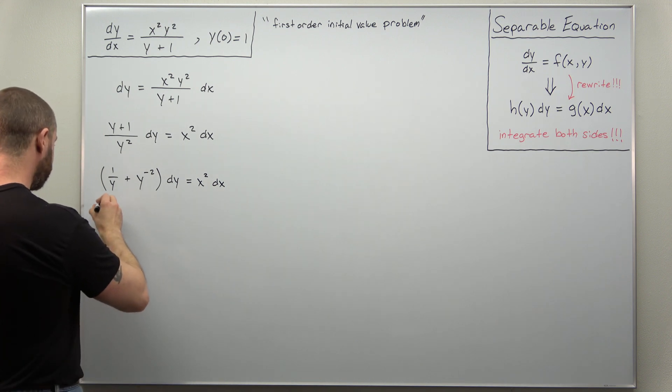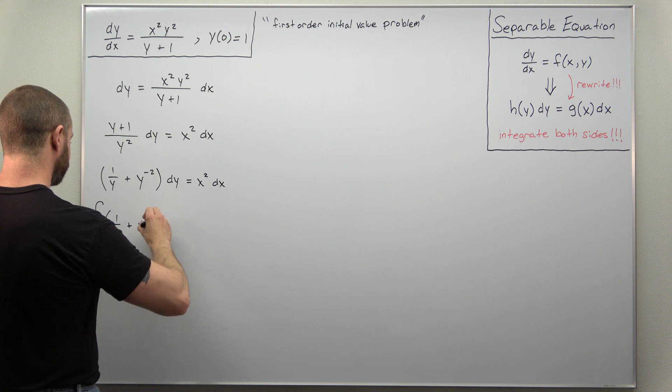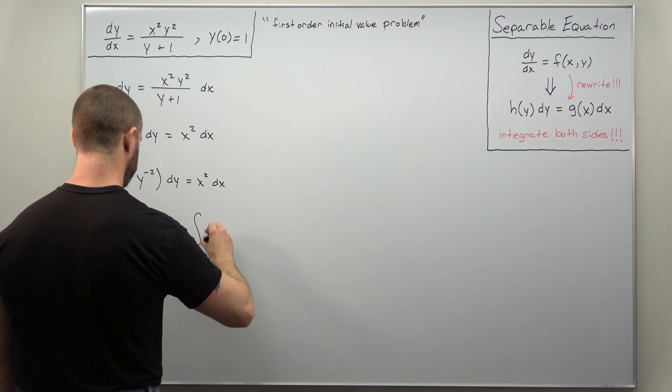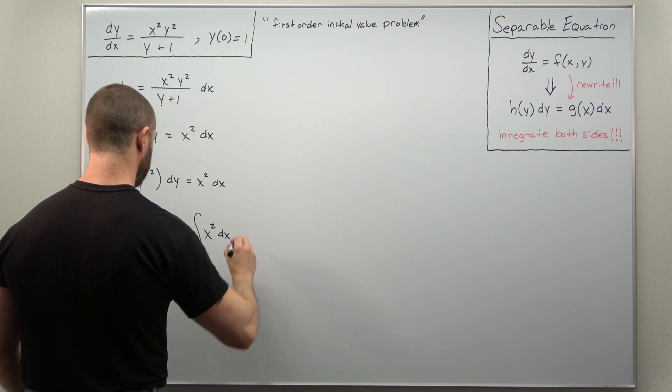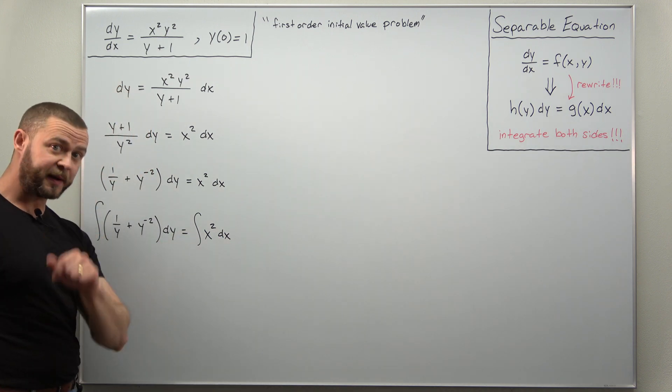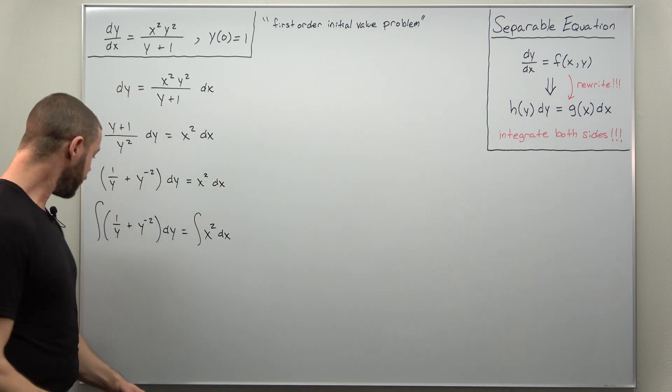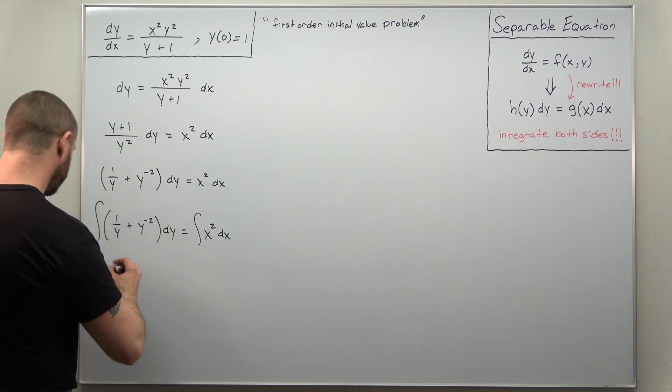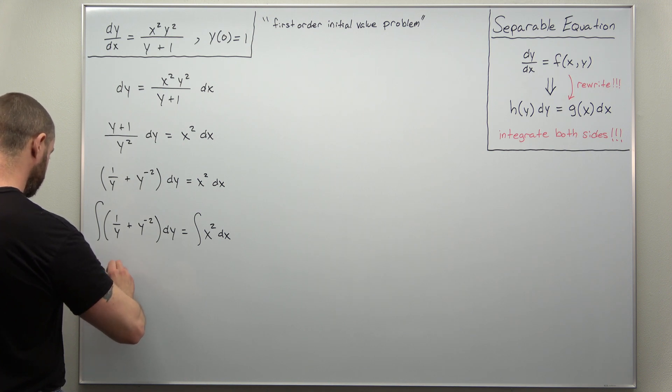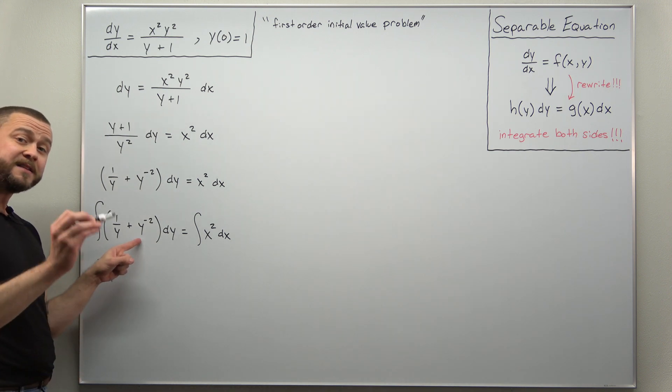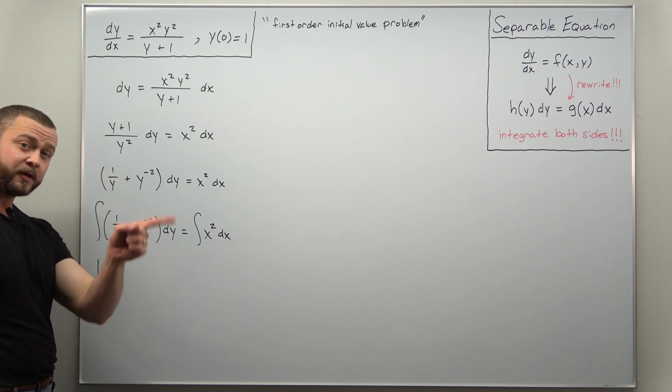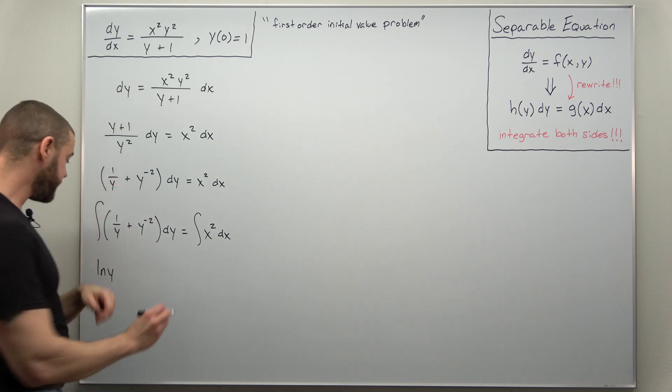All right. From here, we're going to integrate both sides. Left side, we're going to integrate with respect to y. And the right side, we integrate with respect to x. All right. And from here, you should be able to recognize your antiderivatives. One over y, that's going to integrate to natural log of y. And for y to the negative two, we can apply the power rule. Add one to the exponent. That'll give you y to the negative one and then divide by the new exponent.